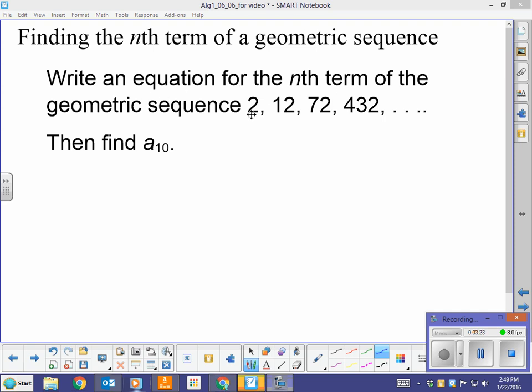Let's write an equation for the nth term of the geometric sequence 2, 12, 72, 432, and we'll find a sub 10. So this equation is going to be for the nth term, a to the nth, that's what we're looking for. The first term here is 2. 2 times what is 12? 2 times 6, we'll just check that. 12 times 6, 72, so I'm going to be multiplying by 6 to the power of n minus 1.